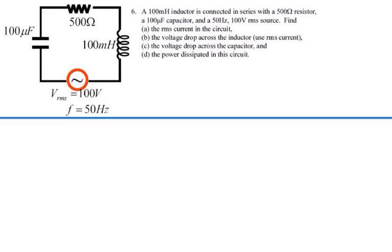Here's sample test four, problem number six. A 100 mH inductor is connected in series with a 500 ohm resistor, a 100 microfarad capacitor, and a 50 Hz 100 volt RMS source. Find the RMS current in the circuit.